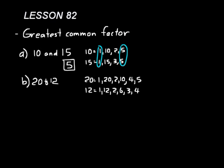Now let's circle all the factors that they have in common. They always have 1 in common, so let's skip the 1. They have 2 in common and they have 4 in common. 4 is the greatest common factor though — it's larger than 2, so 4 is the greatest common factor between those two.